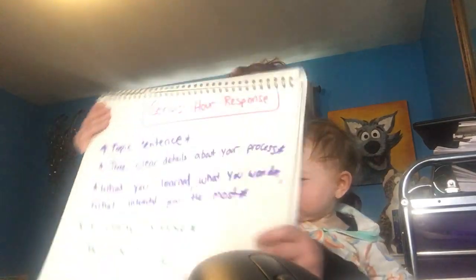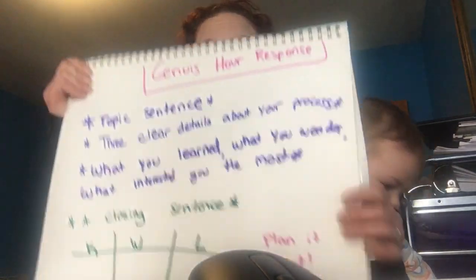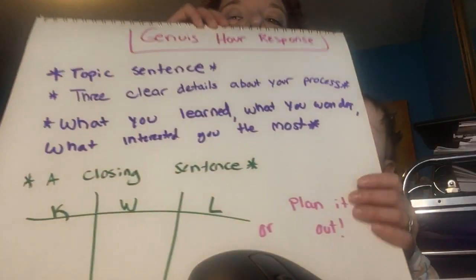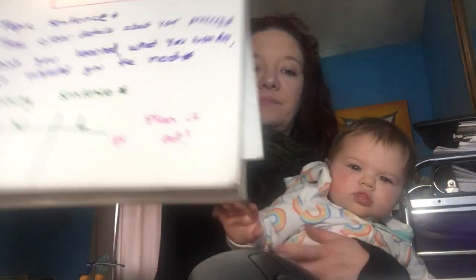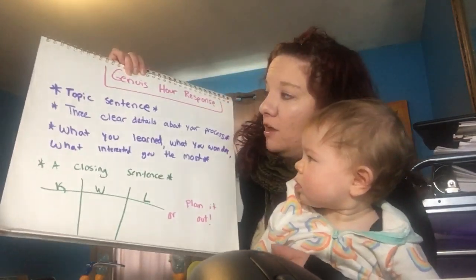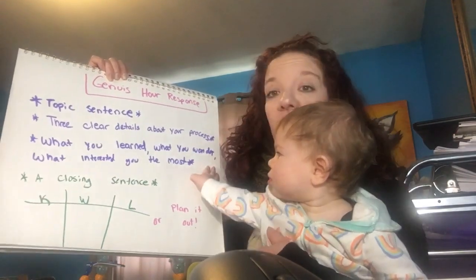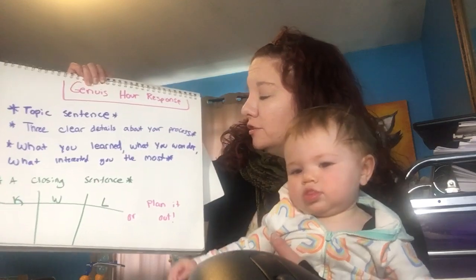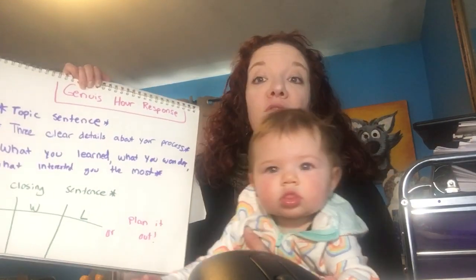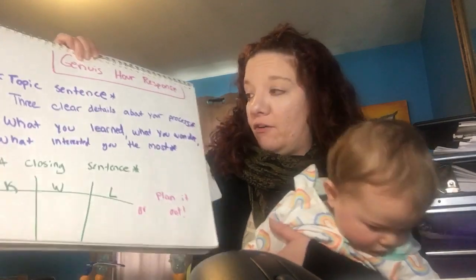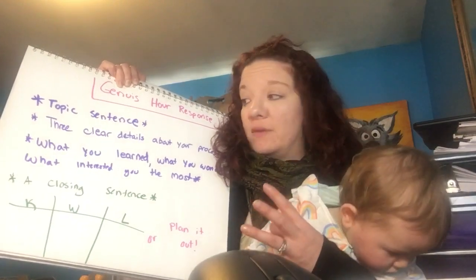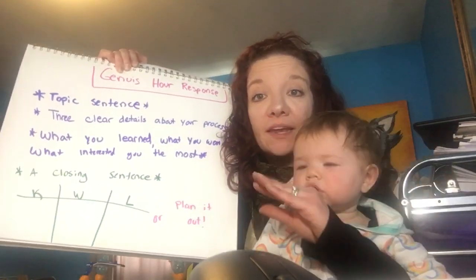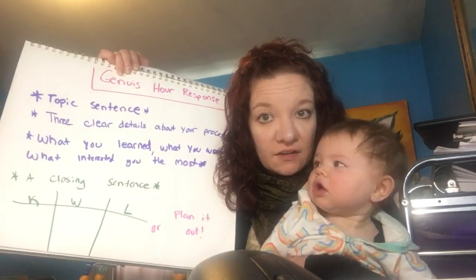So here are a couple of pointers when writing the Genius Hour response. You want to make sure that you have a topic sentence. You also want three clear details about your process — what you learned, what you wondered, and what interested you the most. That's what I added to my paragraph. And then a closing sentence. So a topic sentence, information, and a closing sentence will give you a clear beginning, middle, and end.